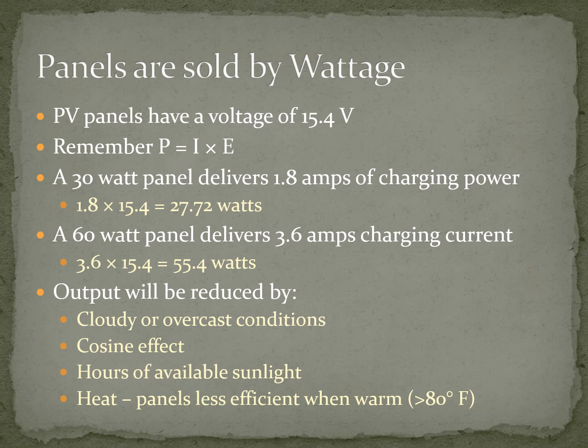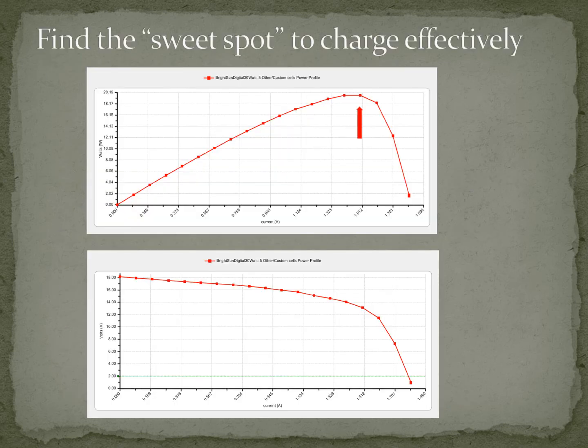I used the West Mountain Radio battery analyzer to determine how my solar panels work. With a 30-watt panel under direct sunlight in the middle of a brightly lit day, I increased the current draw and found a knee on the curve where it suddenly falls off — for this 30-watt panel, that was at about 1.5 to 1.7 amps. As you start drawing more amps, the power output starts to drop dramatically.